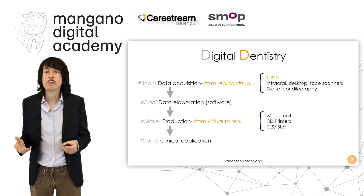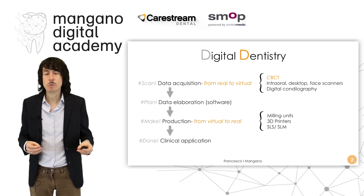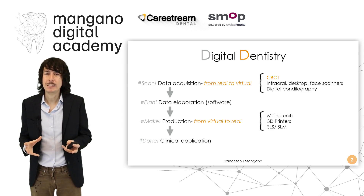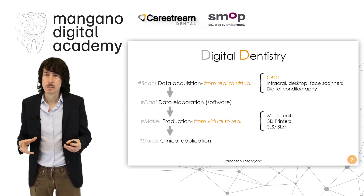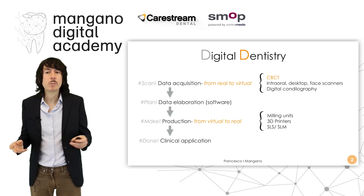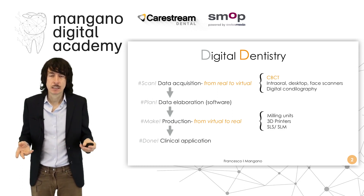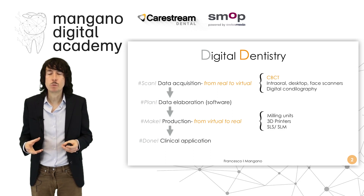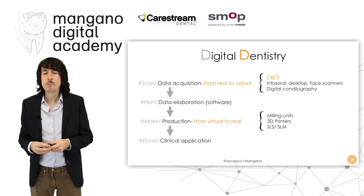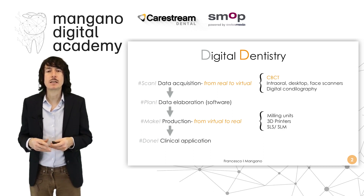We go from the real to the virtual world. In the virtual world, orthodontic computer-assisted design software, prosthodontic CAD software, and surgical software are used to elaborate the data. Then these data are used to model devices — a crown or a bridge in prosthodontics, a surgical guide for surgery, or an orthodontic device — which are physically made through milling units or 3D printers and then applied clinically in the fourth phase.